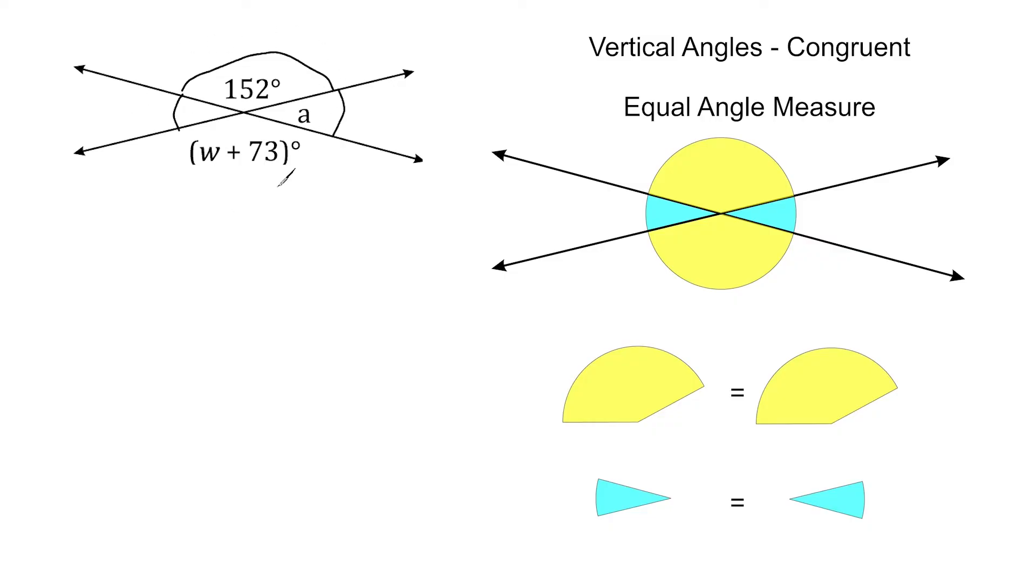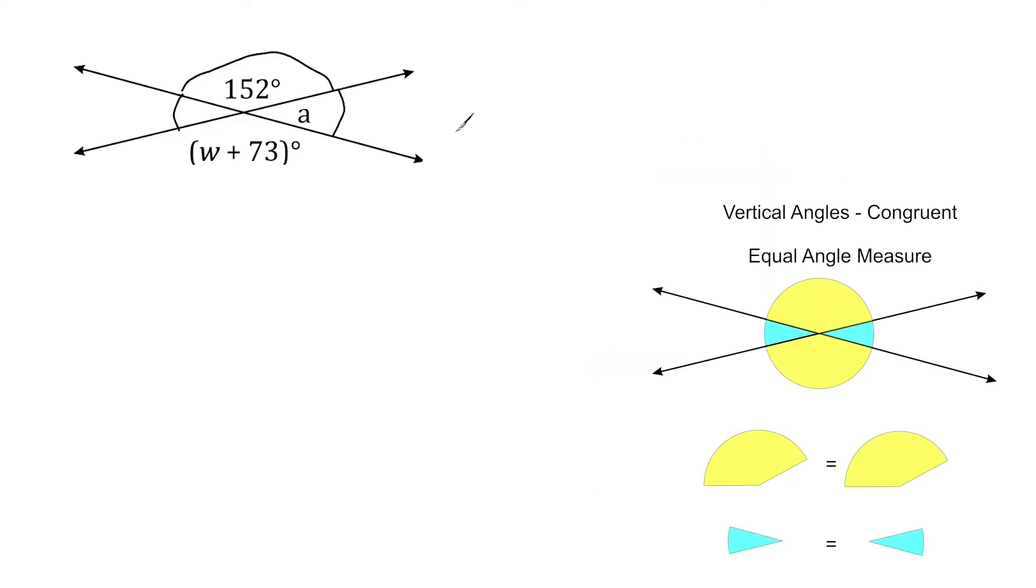So what we're going to do first, because these angles are vertical angles, is we're going to take this expression here, W plus 73, and we are going to set that equal to 152 degrees. Now remember, the reason that we're setting these equal to each other is because we know that with intersecting lines, angles on opposite sides are equal to each other. We call those vertical angles. And whenever you have things that are congruent to each other, that just means they're equal to each other. That means that this expression is equal to 152 degrees. So basically, we're just trying to figure out what do we add to 73, so it's going to be equivalent to 152.